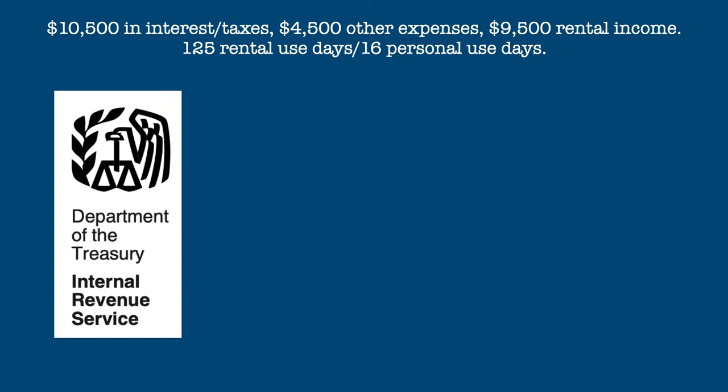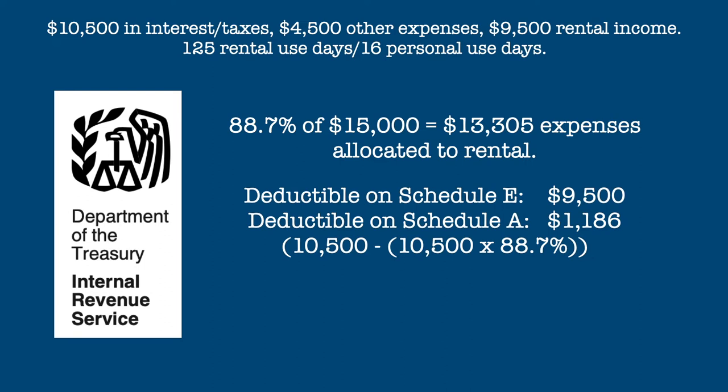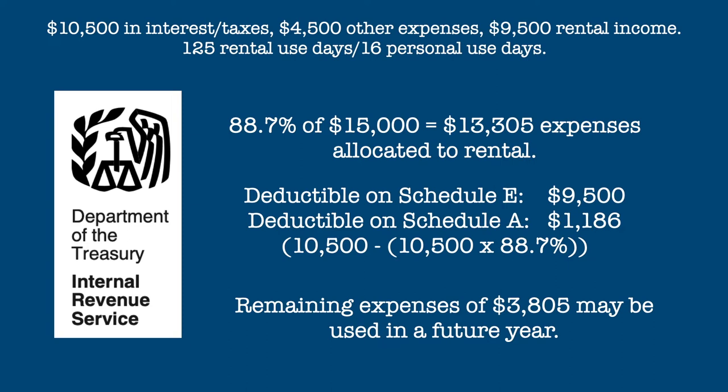Let's take our prior example and split the expenses into $10,500 for interest and taxes and $4,500 for all other expenses. And let's say we collected $9,500 in rentals. Using the IRS method, we would only be able to deduct $9,500 on Schedule E plus an additional $1,186 on Schedule A, which consists of the interest and taxes we didn't allocate to the rental income. These deductions would total $10,686. The remaining $3,805 in rental expenses we couldn't deduct would be carried forward to a future year.